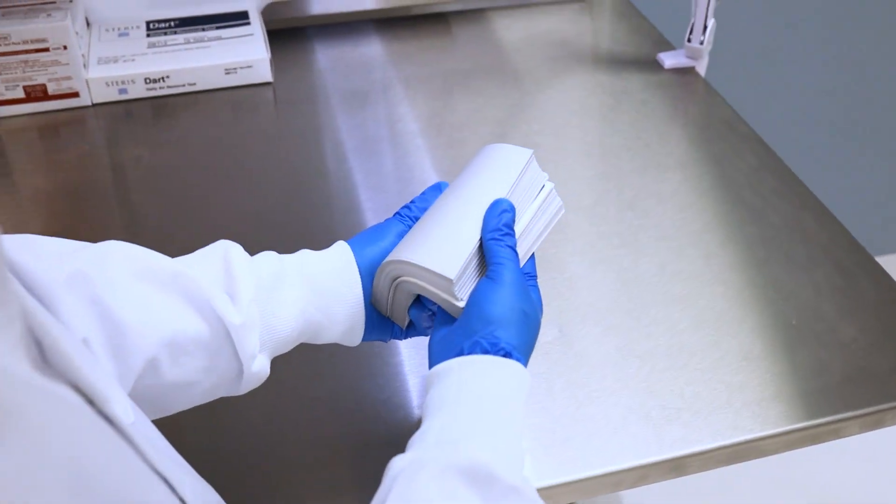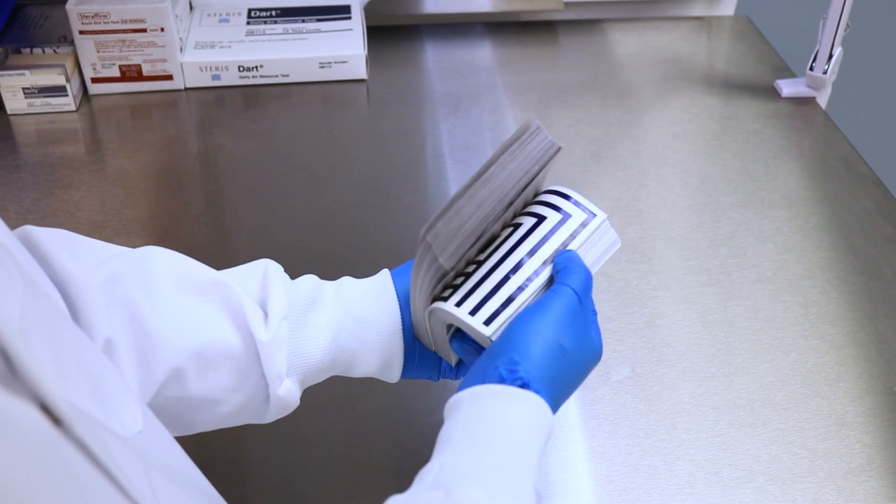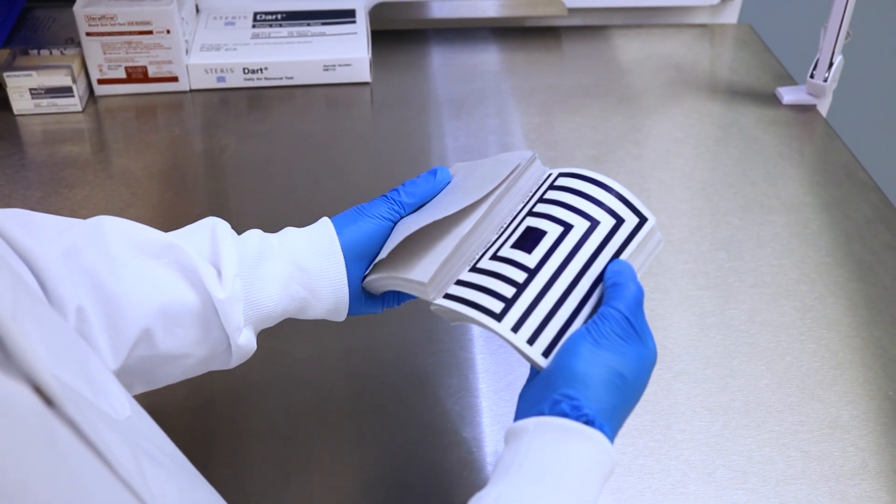Uniform change from yellow to blue indicates adequate steam penetration. Any remaining yellow is considered a failed test.